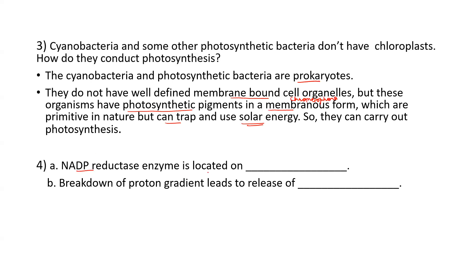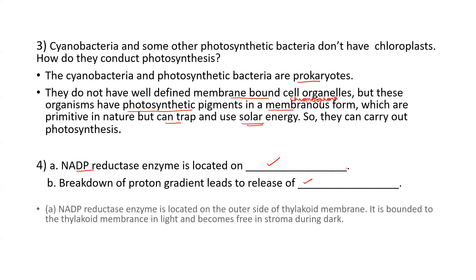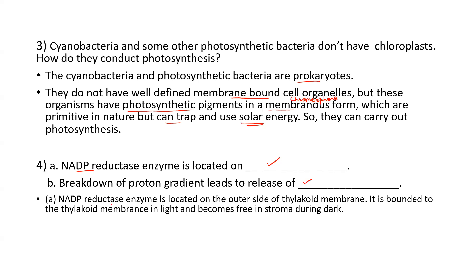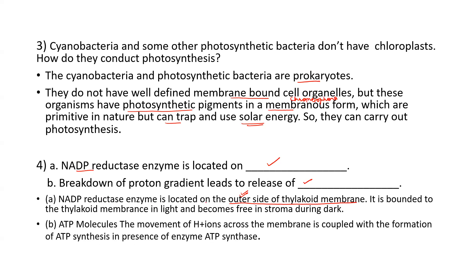Next question: where is NADP reductase enzyme located, and what does breakdown of the proton gradient lead to? The NADP reductase enzyme is located on the outer side of the thylakoid membrane — please check chemiosmosis in your NCERT. Breakdown of the proton gradient will lead to the formation of ATP molecules.